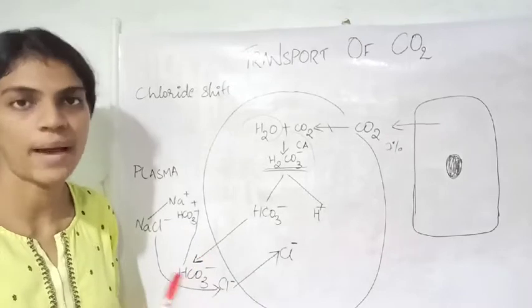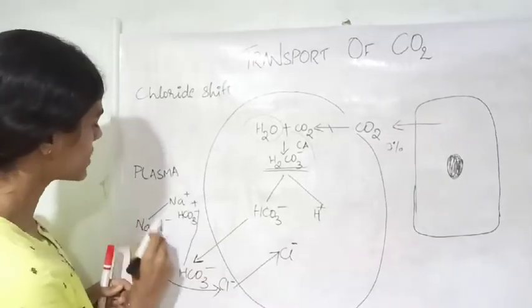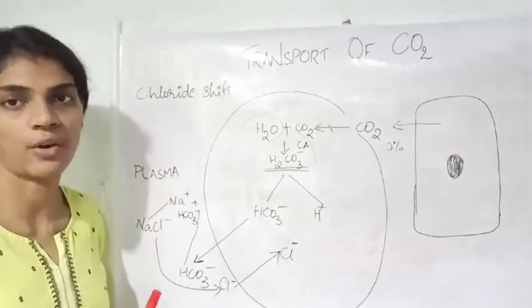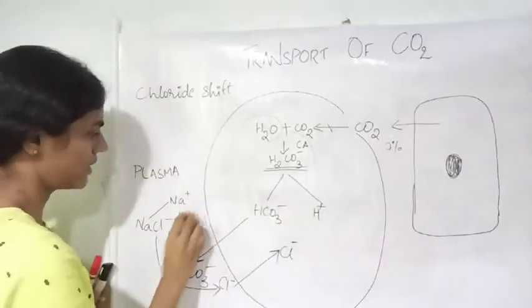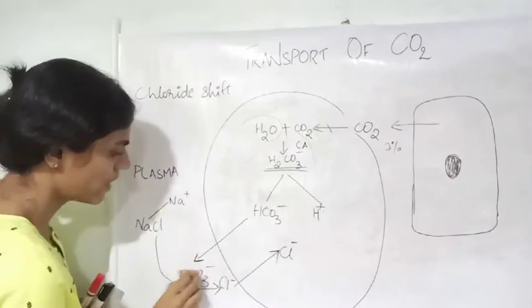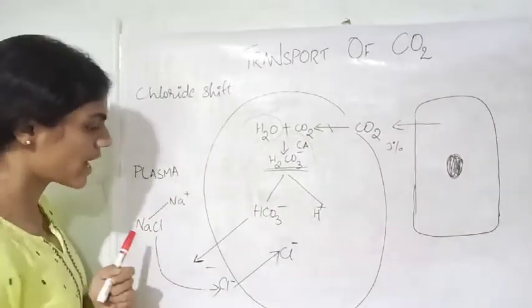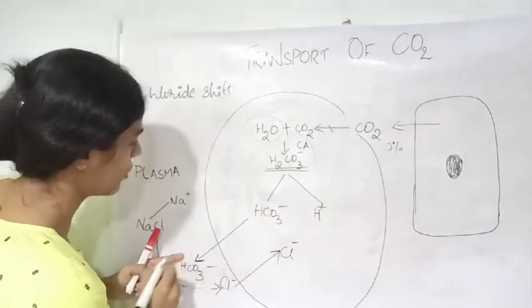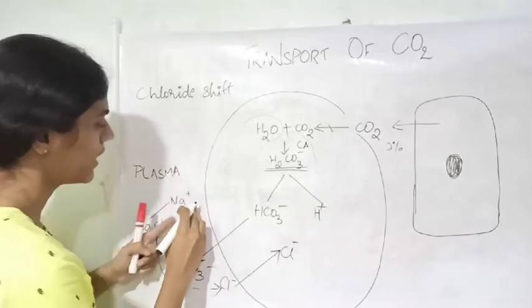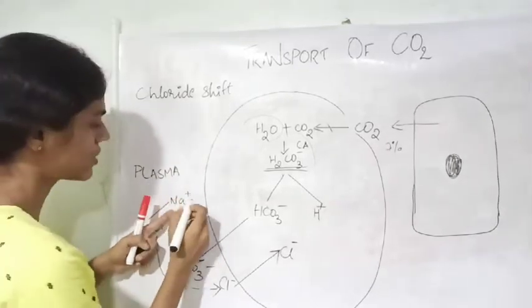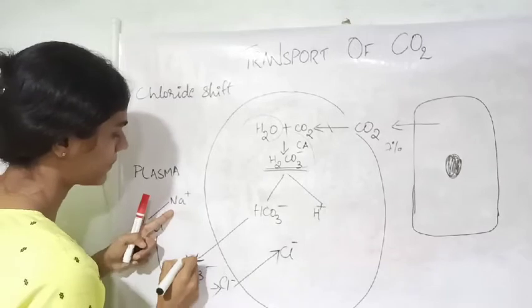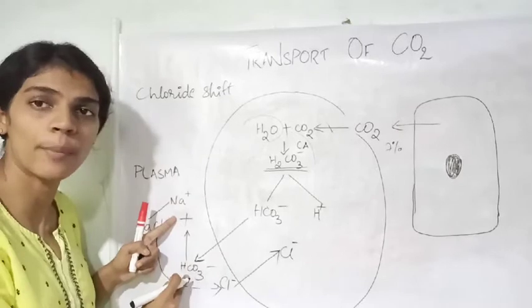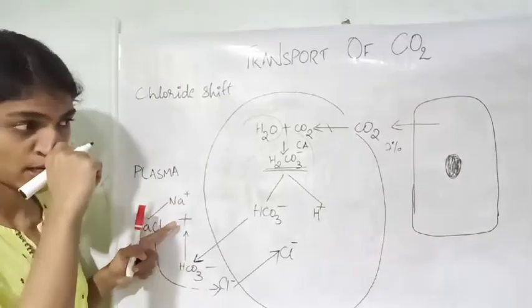To maintain the ionic balance, this Na+ combines with the bicarbonate ion. The bicarbonate ion is expelled from the RBC into the plasma. This bicarbonate ion will form a combination with sodium—the sodium combines with the bicarbonate forming sodium bicarbonate.